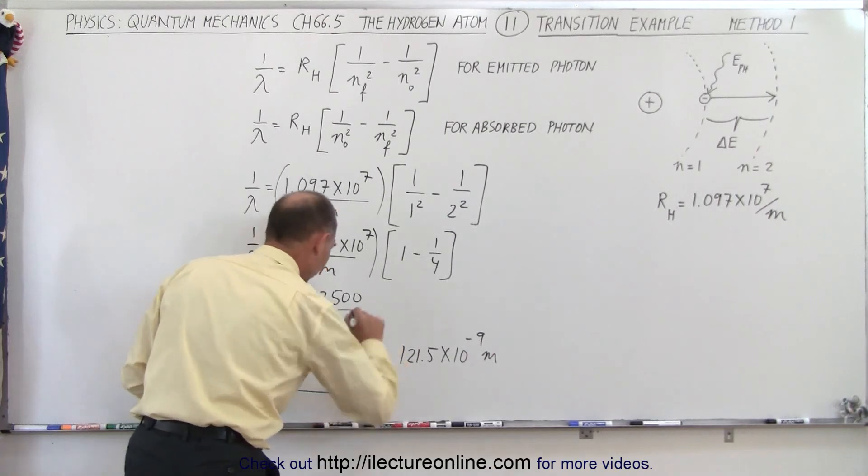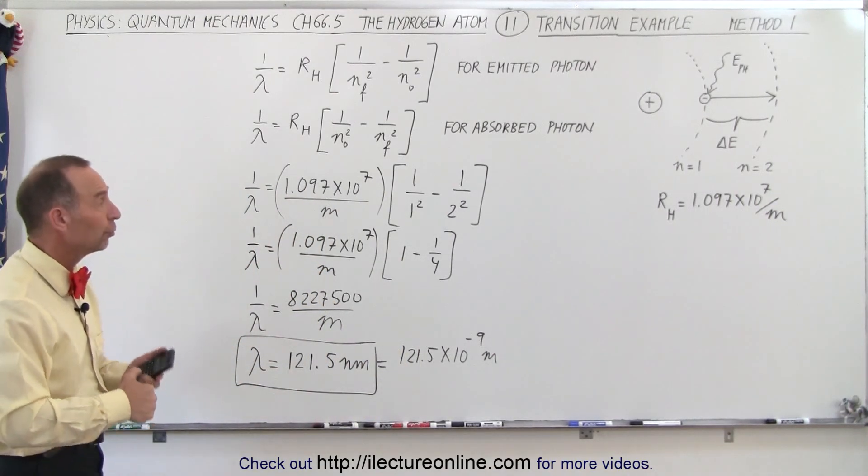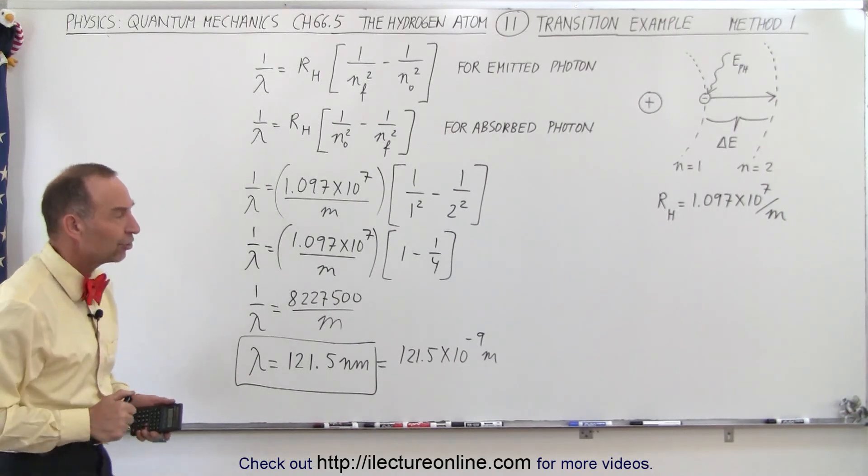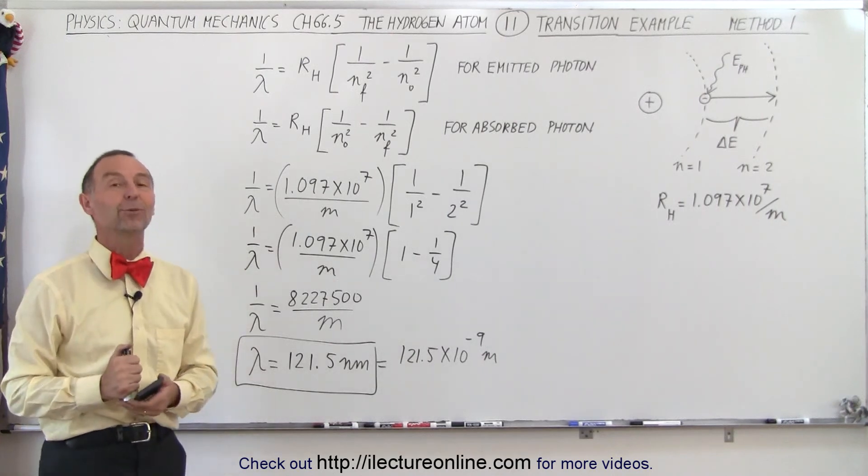If you like that format better. But that's how we find the wavelength of the photon during electron transitions in a hydrogen atom. Now that's of course using this equation. That's why we call it method 1.